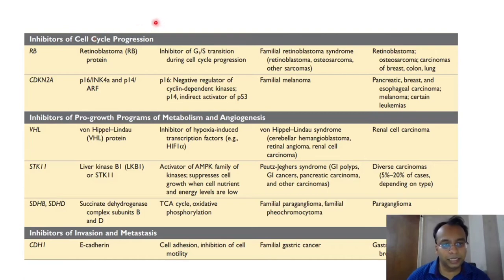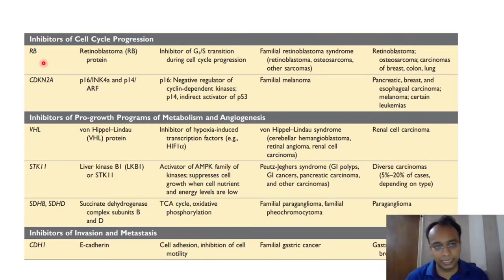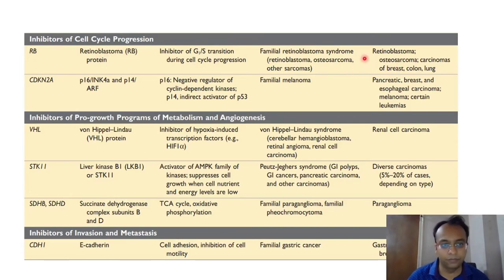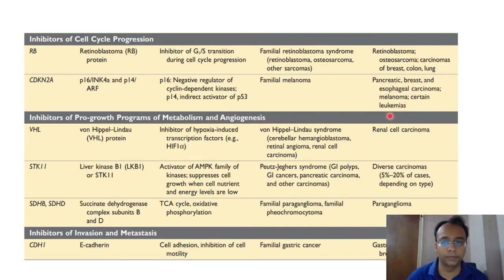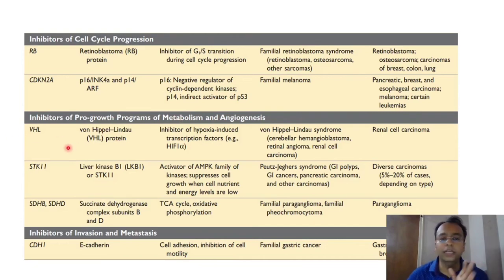The second group is inhibitors of cell cycle progression. RB gene prevents G1/S progression — if mutated, retinoblastoma, osteosarcoma, breast, colon, and lung carcinoma can develop. CDKN2A is also associated with a variety of tumors including pancreatic, esophageal, melanoma, and leukemias. The third group is inhibitors of pro-growth metabolism and angiogenesis — the VHL gene, commonly associated with renal cell carcinoma.